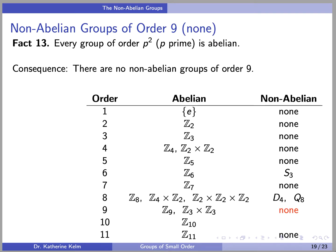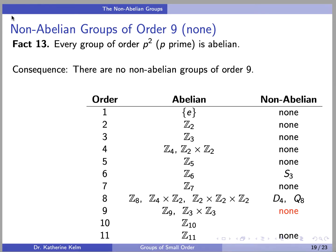We only have orders 9 and 10 in the non-abelian case to go. The good news is that there are no non-abelian groups of order 9. Fact 13 says that every group of order p squared, where p is prime, is abelian. The consequence is there are no non-abelian groups of order 9. In fact, we could have used this fact to show there are no non-abelian groups of order 4 as well.